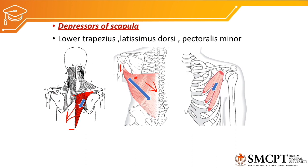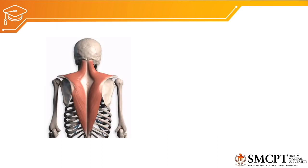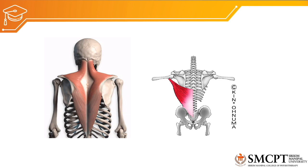The pectoralis minor originates from the third, fourth, and fifth ribs and inserts into the coracoid process. When this muscle contracts it pulls the coracoid process and the scapula downward, creating depression of the scapula. You can visualize how the lower trapezius pulls the scapula downward, and how the latissimus dorsi pulls the scapula as well as the humerus downward.